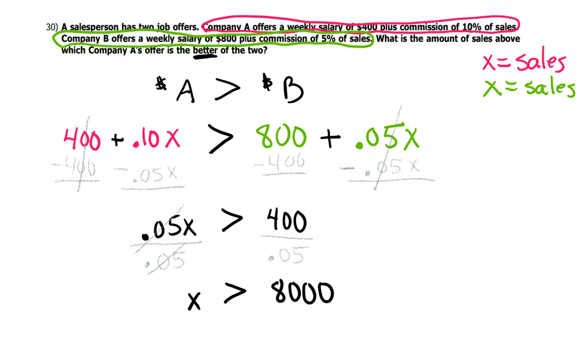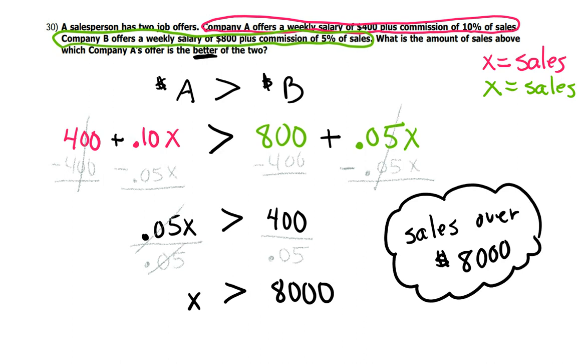So what is the amount of sales above which company A's offer is better? You'd have to have sales over $8,000. So if you're trying to make this decision, okay, this is a week. I have to sell $8,000 worth of merchandise a week. So what kind of job do you have? Are you working at Kohl's selling clothes? Because I ain't going to be selling $8,000 worth of clothes a week. Probably not.